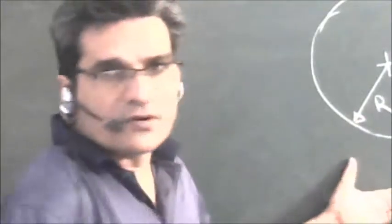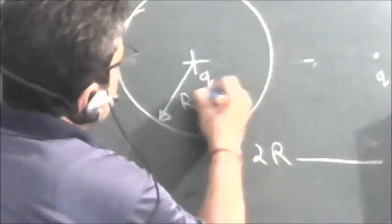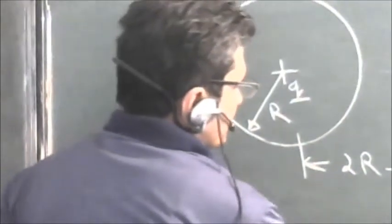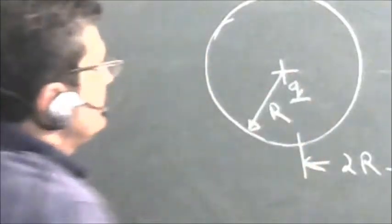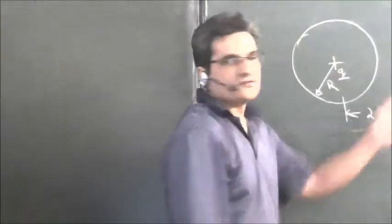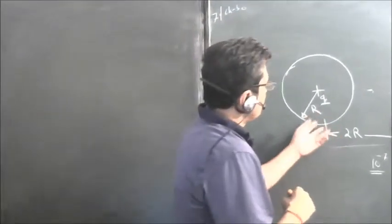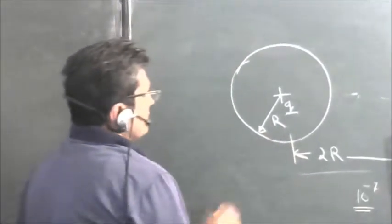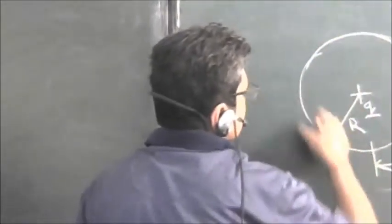We will solve HC Verma problem 7, chapter 30. In this problem we have been given a charge Q of value 10 to the power minus 7 coulombs placed inside a spherical surface of radius R. There is another equal charge placed at a distance 2R from the center of this sphere. We have to find out what is the value of flux through this sphere.